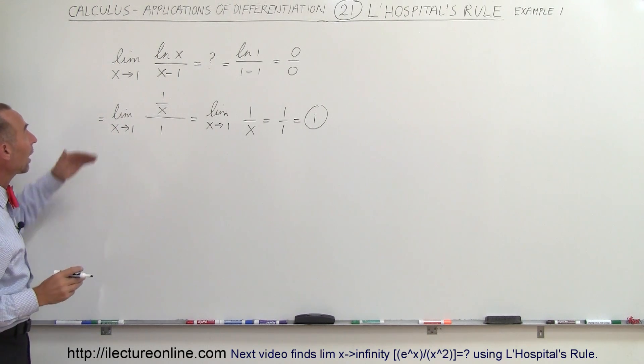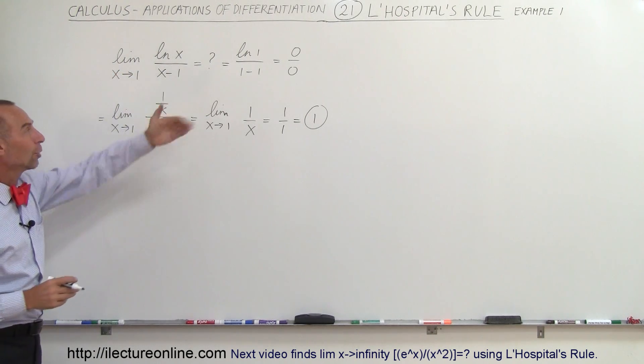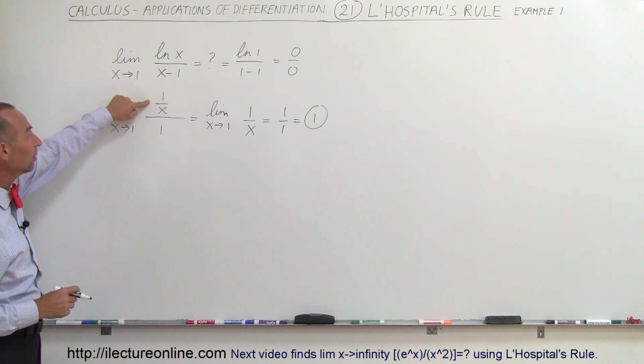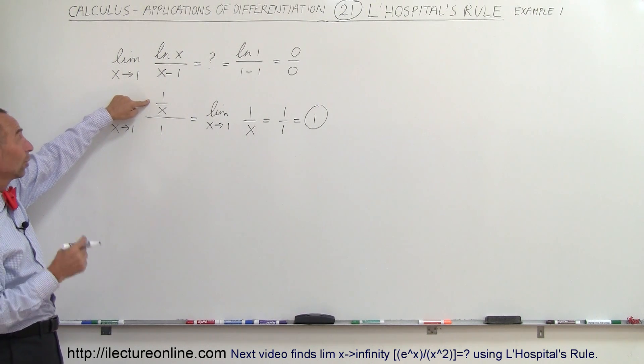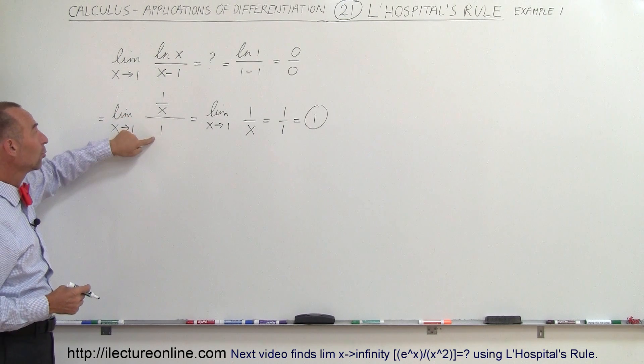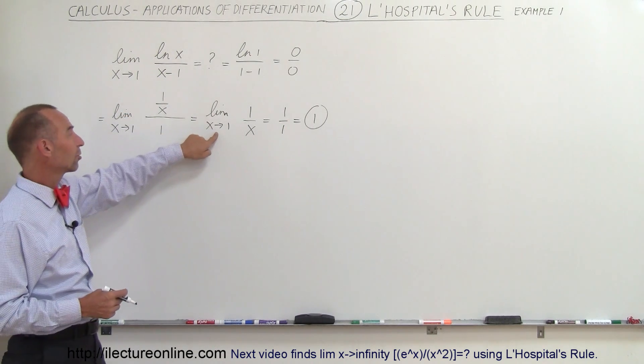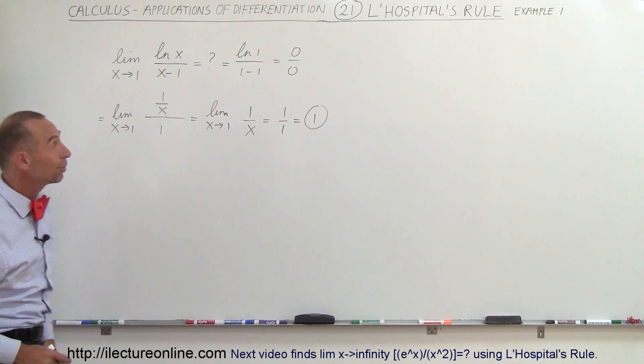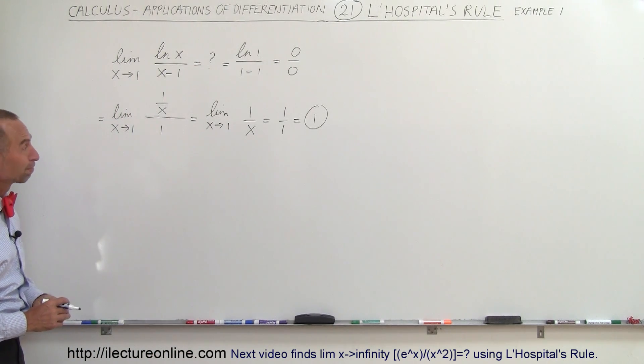So initially when you allow x go to 1 of this problem you don't get the right answer, you get an undetermined answer. But if you take the derivative of the numerator, the derivative of natural log of x is 1 over x, derivative of the denominator is 1, that becomes the limit as x goes to 1 of 1 over x which is simply equal to 1. And so it's pretty easy, pretty straightforward. That's how we do that.